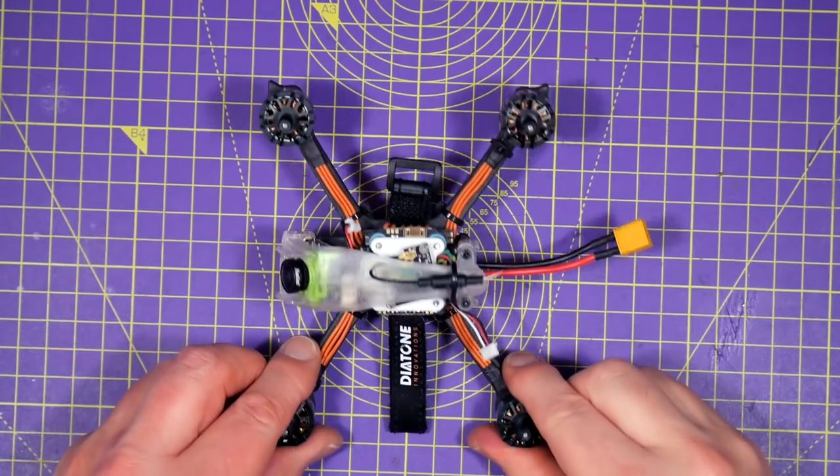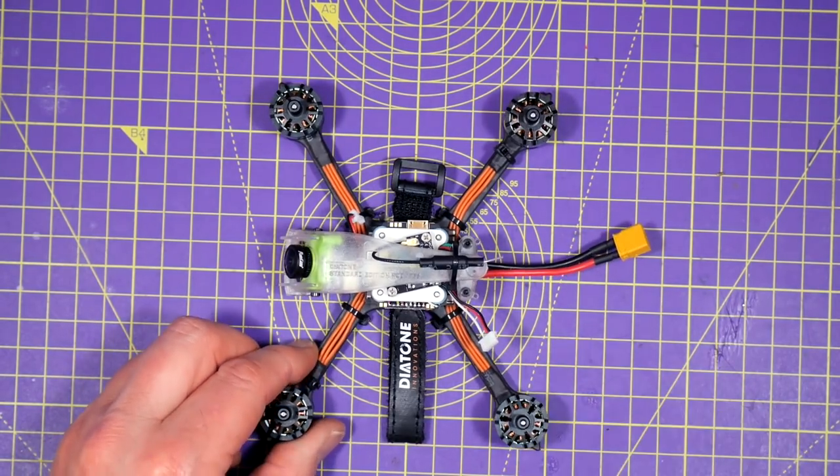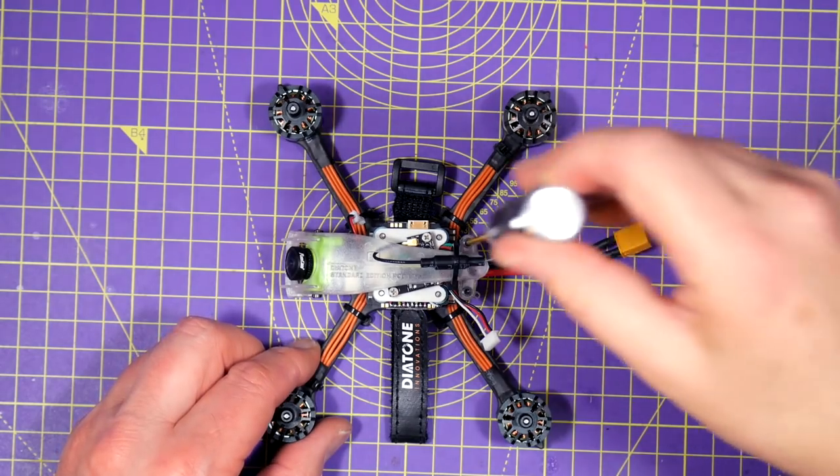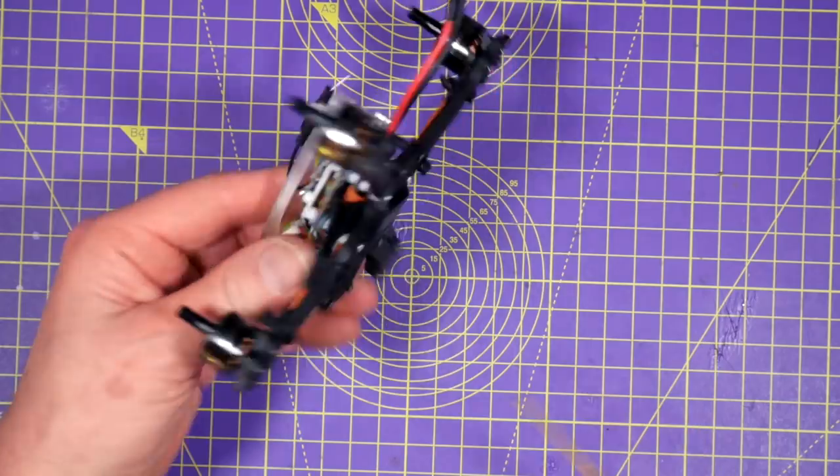Getting the R349 setup is pretty easy. First thing to do is remove the canopy. There's two cap head screws on the top and two on the bottom at the front.